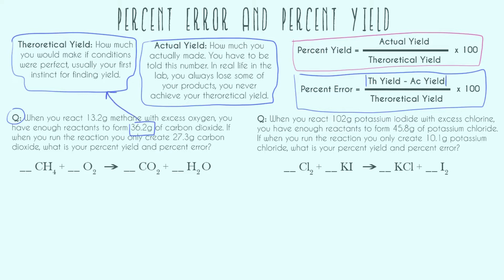So reading the question, if we have enough reactants to form 36.2 grams of carbon dioxide, this is our theoretical yield. And then it says, if when we ran the reaction, we actually only created 27.3 grams carbon dioxide, that's our actual yield. Technically, if we didn't mess up at all, we could have had 36.2, but we only made 27.3. So now we have enough to go ahead and plug in.